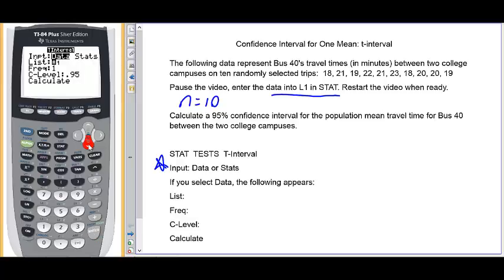The data list should be L1, if that's where you put your data. So remember second, L1. Frequency is just a 1. Confidence level, we want 95%, and then we'll get ready to calculate.